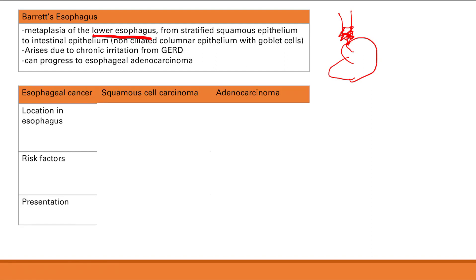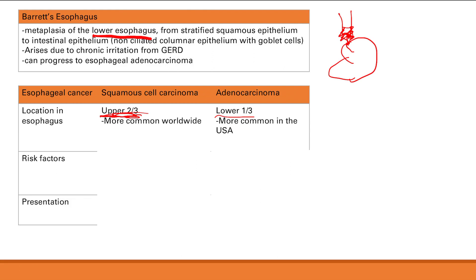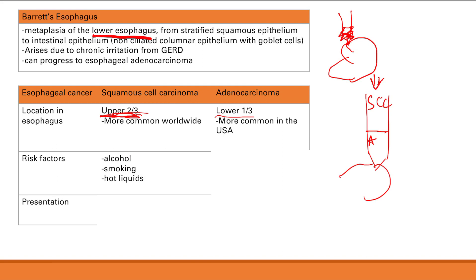There are two types of esophageal cancer: squamous cell carcinoma and adenocarcinoma. Squamous cell carcinoma occurs in the upper two-thirds of the esophagus and is more common worldwide. The risk factors are substances that go down the esophagus and cause irritation: alcohol, smoking, and hot liquids. These cause burning and damage to the squamous cells normally lining the esophagus, making them cancerous.